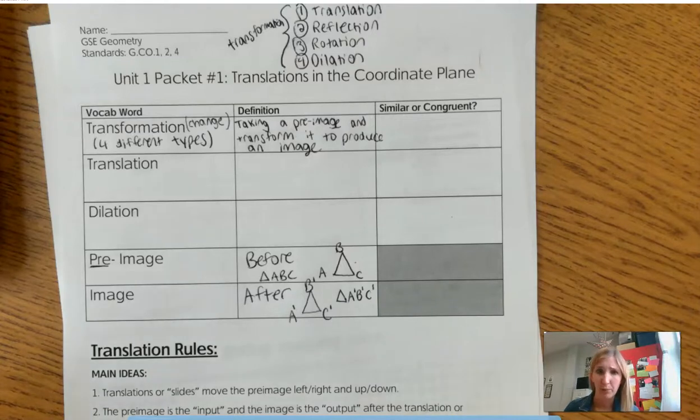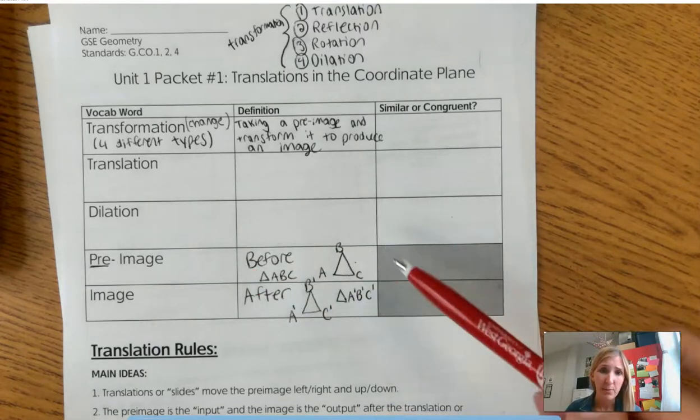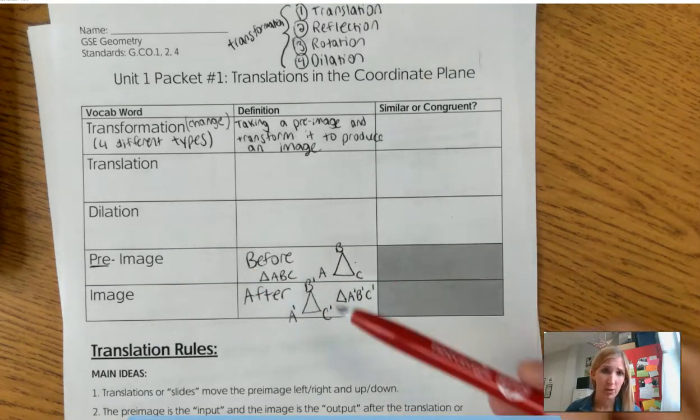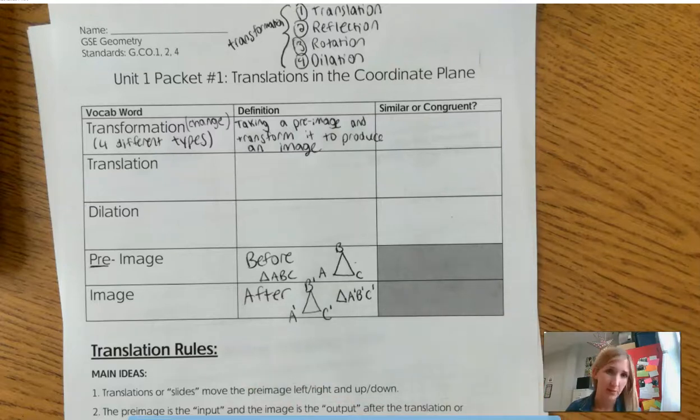Alright, so that way you know which image came before and which image came after. So if you saw these two triangles in a coordinate plane and no one told you which one was first, you'd be able to know based on the naming, right? ABC is the pre-image, and A prime, B prime, C prime is the image.